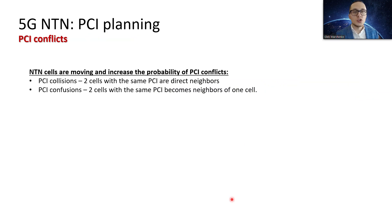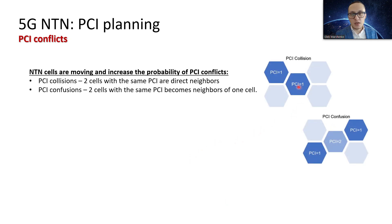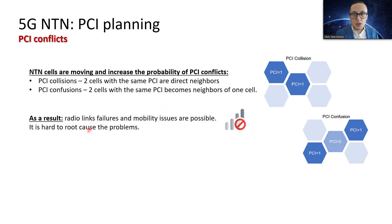Let's also understand the topic of PCI conflicts. There are two types. The first type is PCI collision, which is when two cells with the same PCI are direct neighbors. PCI confusion is when, for our own base station or cell, neighbor cells have the same PCI and they overlap in physical coverage, making it confusing to determine the right PCI to decode.